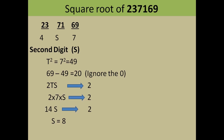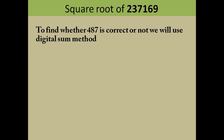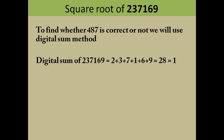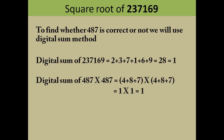So the second digit is 8 and the final answer is 487. Now we verify using the digital sum method. Add all digits of 237169: 2+3+7+1+6+9 = 28, then 2+8 = 10, then 1+0 = 1, so the digital sum of 237169 is 1. Now find the digital sum of 487 into 487: 4+8+7 multiplied by 4+8+7 — the answer comes to 1. Since the digital sums match, our answer 487 is correct. If it had not matched, the last digit would have been 3 and we would have followed the same steps from that point.